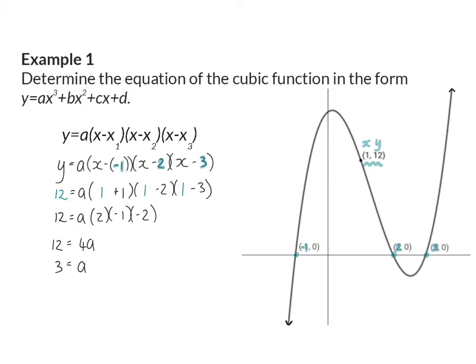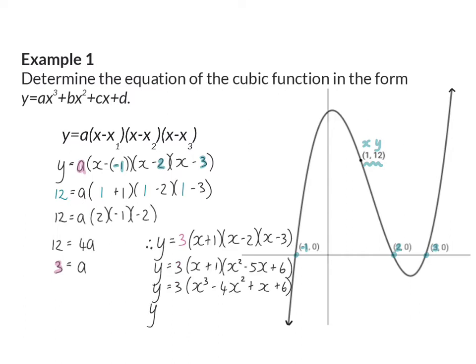To finalize the equation we are going to substitute this a value back into the equation and multiply out. So the equation for this function is 3x cubed minus 12x squared plus 3x plus 18.